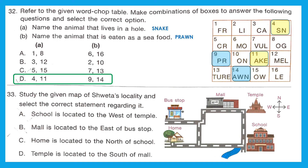Question 33: Study the given map of Shweta's locality and select the correct statement. Option A — school is located to the west of the temple — is wrong; school is to the south of the temple. Option B — mall is located to the east of the bus stop — this is correct. Option B is the right answer. Refer to the directions given in the question to identify the correct option.